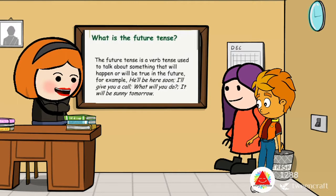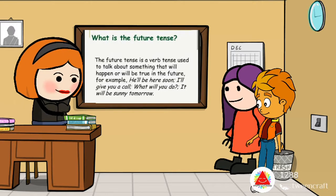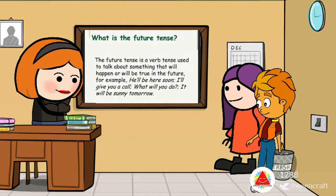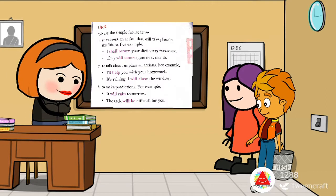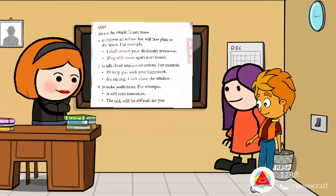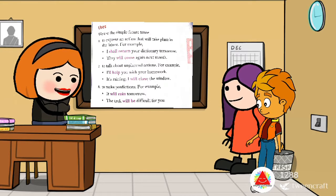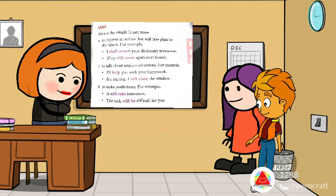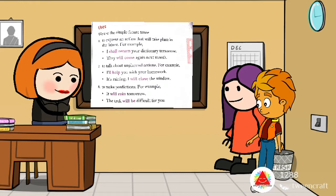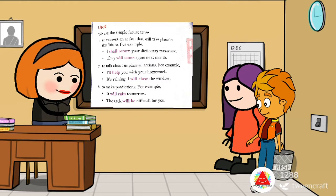For example: he will be here soon. I will give you a call. What will you do? It will be sunny tomorrow. We use the simple future tense to express an action that will take place in the future. For example, I shall return your dictionary tomorrow. They will come again next month.